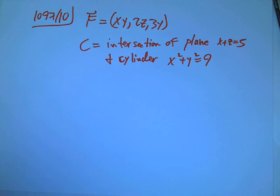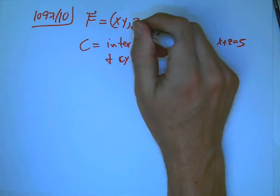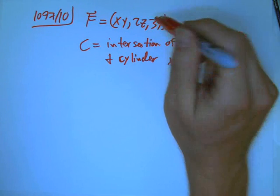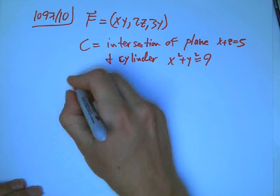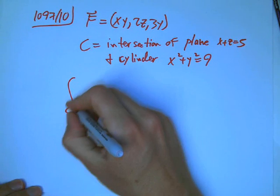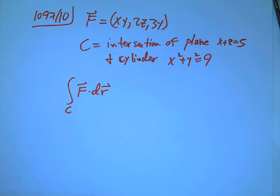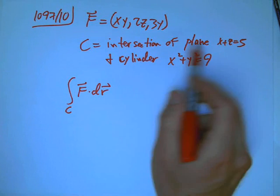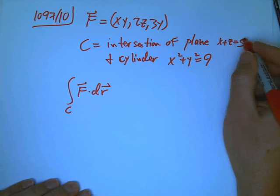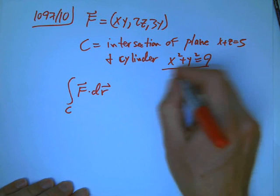We've got a vector field F is xy i plus 2z j plus 3y k. And we're trying to evaluate the integral over a curve of this vector field. And it's the intersection of a plane, a sloping plane x plus z equals 5, and a cylinder with the z-axis.